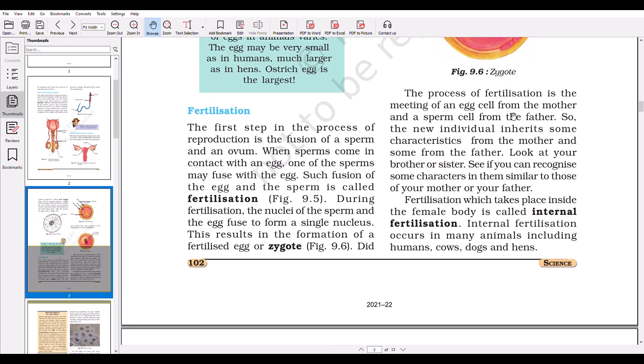The process of fertilization is the uniting of an egg cell from the mother and sperm cell from the father, so the new individual inherits some characteristics from the mother and some from the father. Look at your brother or sister and see if you can recognize some characters in them similar to those of your mother or father, like curly hair or eye color.